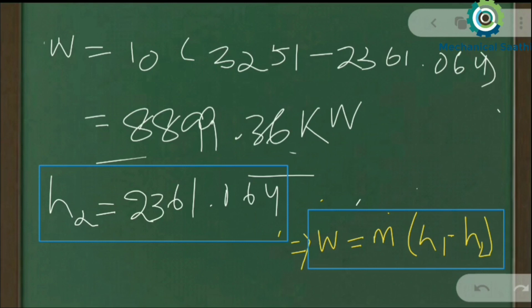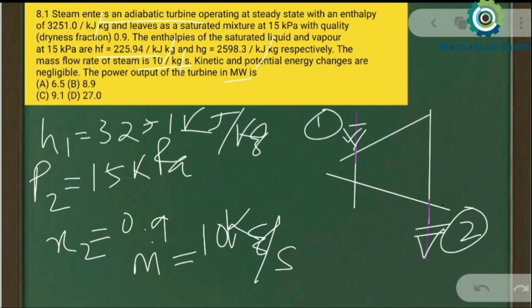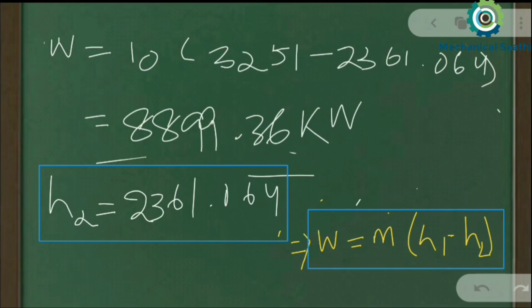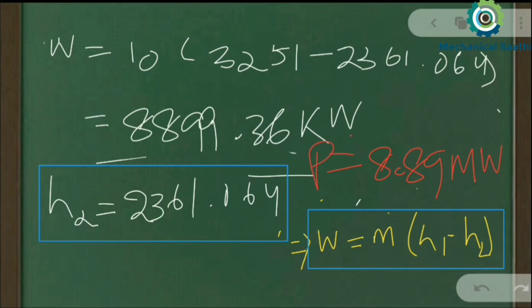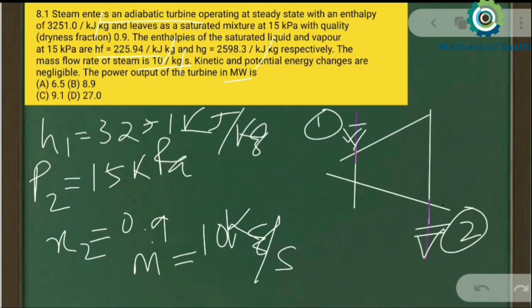The unit is kilowatts since enthalpy was in kJ/kg and mass flow rate in kg/s. The question asks for the answer in megawatts, so converting: 8899.36 kW ≈ 8.9 MW. Therefore the power output from the turbine is approximately 8.9 megawatts.